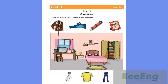Can you see the jacket? Yes, I can. Put the jacket on the chair. OK. The jacket is on the chair. Can you see the line? This is an example. Now you listen and draw lines.